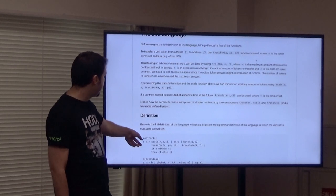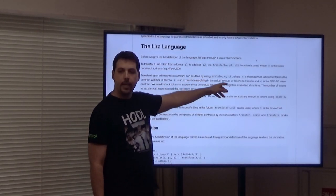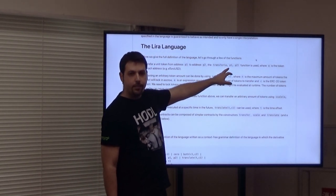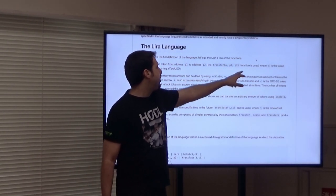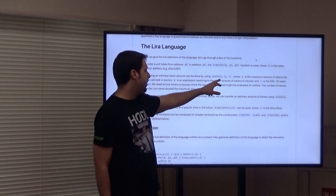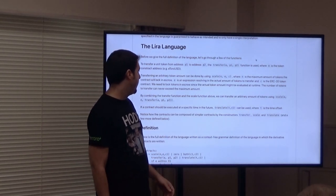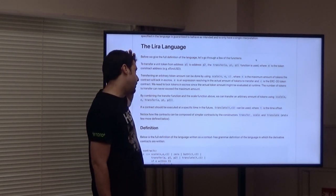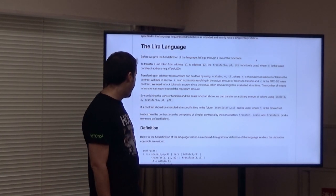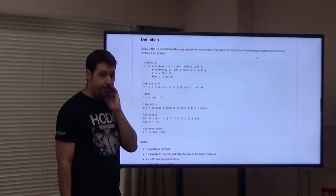We have examples of how 'transfer' and 'scale' work. For a transfer, you need an address for the token, then party one and party two. In 'scale', you have two parameters: N, which is the maximum amount required to be in the custodial, and E, which is the expression of how much you want to multiply.